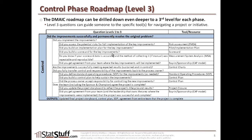Did you build a scorecard for the key improvements? It's critical to have a scorecard to track those improvements and make sure they remain successful and sustained as intended. Next, do you know if your scorecard data is accurate, and if the method for collecting it is manual, was it repeatable and reproducible? Just as we ran a measurement system analysis, or MSA, back in the measure phase to trust our data, we're still doing a lot of data collection at this point. If it's manual, we need to make sure we can trust the accuracy, repeatability, and reproducibility of the data, which may require another MSA.